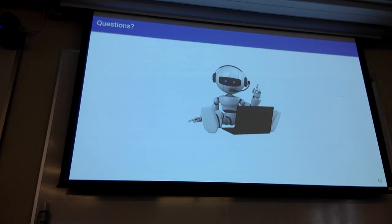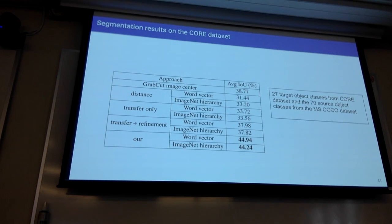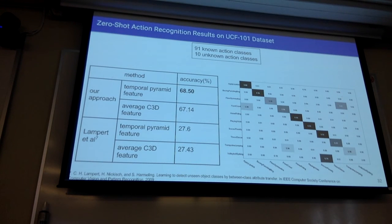In Q&A: It's always interesting in zero-shot work to look at errors and confusion matrices. Some confusions made a lot of sense and some didn't. For instance, 'applying lipstick' was really confused with 'front crawl.' Do you have any reason for what the confusion was? It seems like other things here seem much closer together than those two.